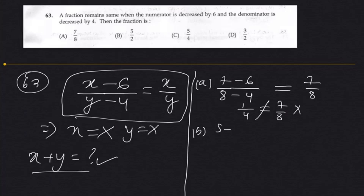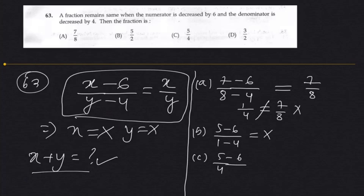Option B: 5 minus 6 over denominator decreased by 4 — this also cannot be the answer. Option C: 5 by 4 — numerator 5 minus 6 gives a negative, denominator 4 minus 4 is 0. This cannot be the answer.